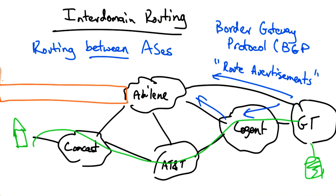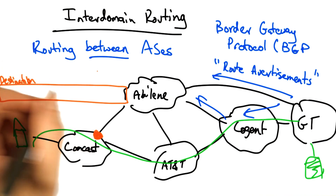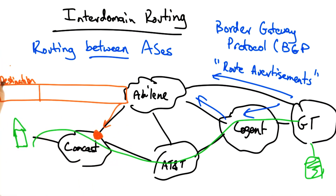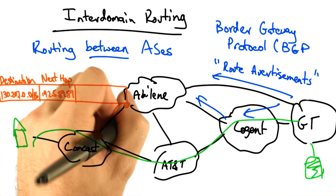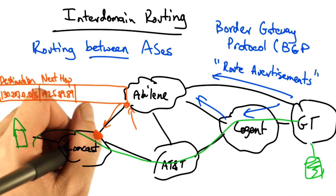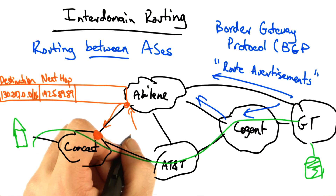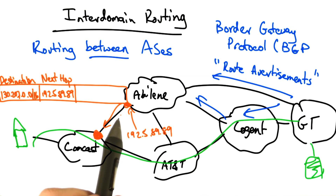A route advertisement has many important attributes, but let's talk about three. A router in the Comcast network might receive a route advertisement, typically from its neighboring AS. That route advertisement might contain a destination prefix, such as the IP prefix for Georgia Tech. It might also contain what's called a NextHop IP address, which is the IP address of the router that the Comcast router must send traffic to in order to send traffic along that route.